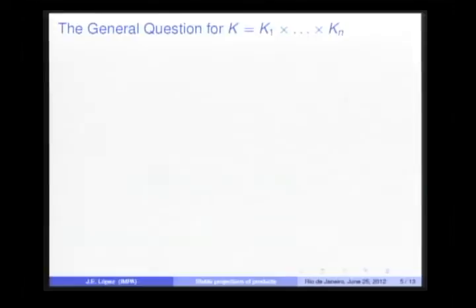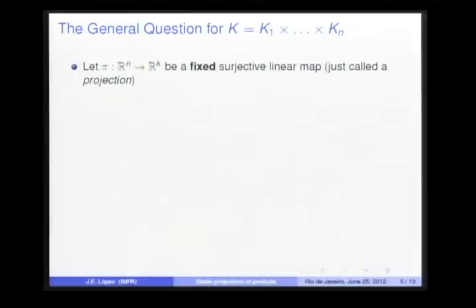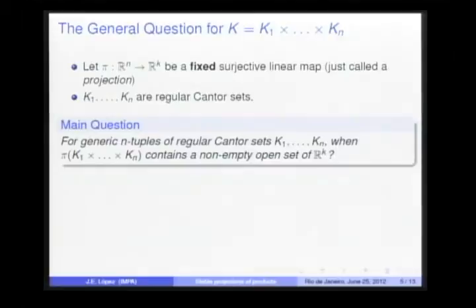Let π from ℝⁿ to ℝᵏ be a surjective linear map, just called a projection, and K₁ to Kₙ are regular Cantor sets. Our main question is the following: For generic n-tuples of regular Cantor sets, when does the projection of their Cartesian product contain a non-empty open set?